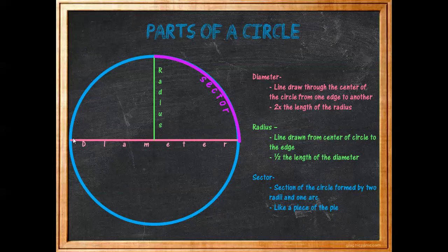The diameter is a line drawn through the center of the circle from one edge to another — it's the whole length. It's two times the radius. The radius is the line drawn from the center of the circle to the edge. It's half the length of the diameter.